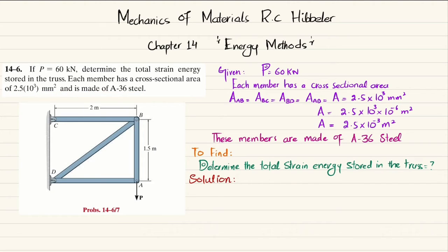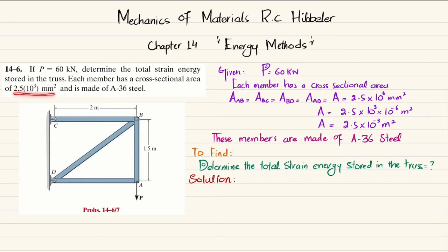The truss is made up of different members: AB, BC, CD, and AD. Each member has the area shown. There is a load P equal to 60 kilonewtons. Due to this load, there will be axial stresses in the members, and we need to find the total strain energy stored in the truss.